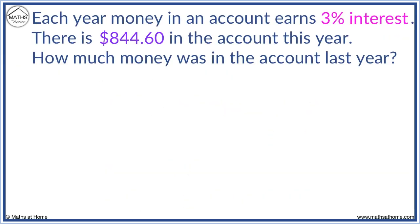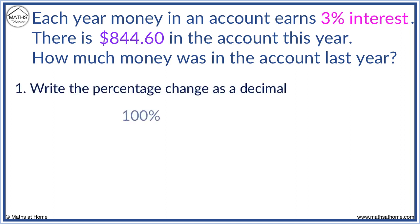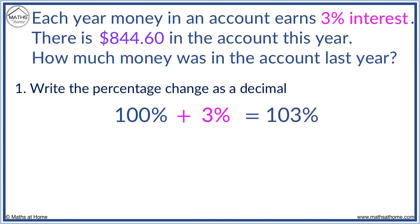Each year money in an account earns 3% interest. There is $844.60 in the account this year. Starting with 100%, interest causes the money to grow, so 3% interest results in 103%, which is 1.03 as a decimal.